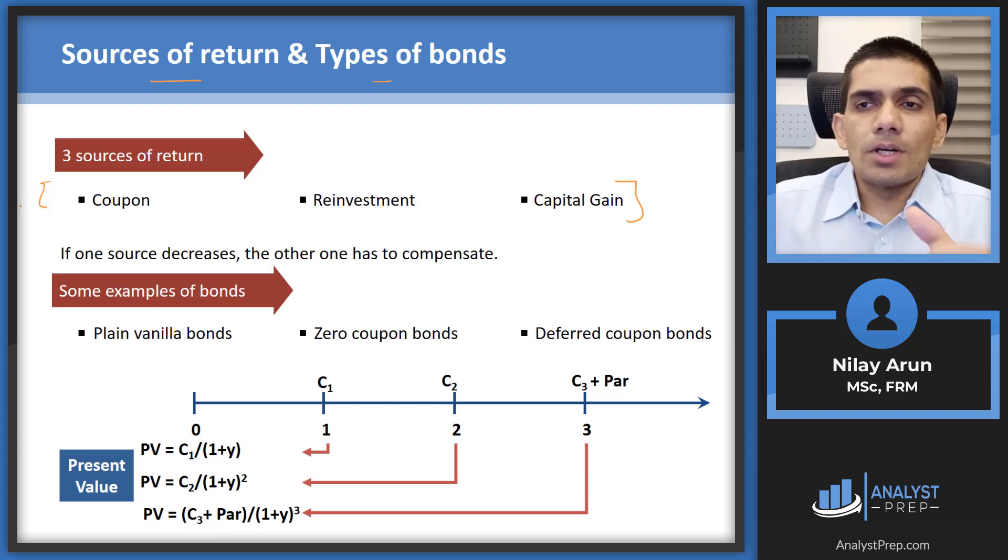Second is reinvestment. What do we mean by reinvestment? Every coupon that you're getting, what do you do with that coupon? You're going to reinvest it at the market rate of return. So that coupon is not just lying idle, it is also earning additional rate of return on that. So that is your reinvestment income.